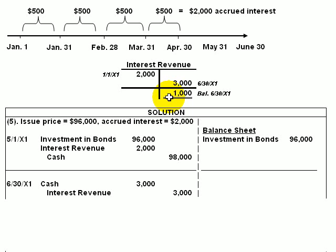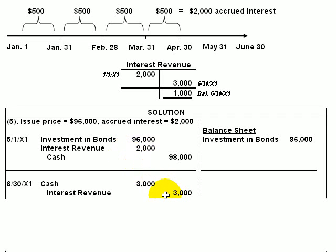In effect, what's happened is the issuing corporation gave the investor $3,000, but the investor realizes that $2,000 of this $3,000 has not been earned and so gives it back. It's just that the entries are reversed. We gave the $2,000 back to the issuing corporation before the issuing corporation gave us the $3,000.